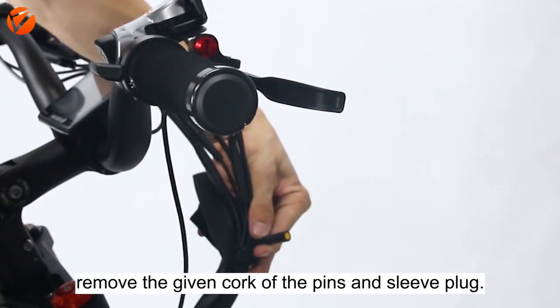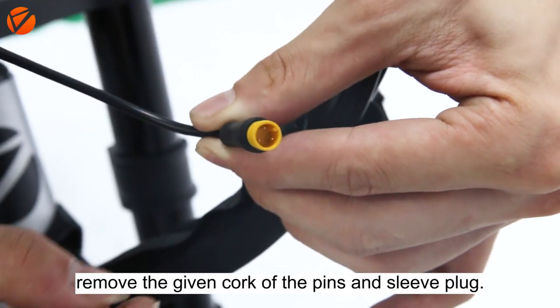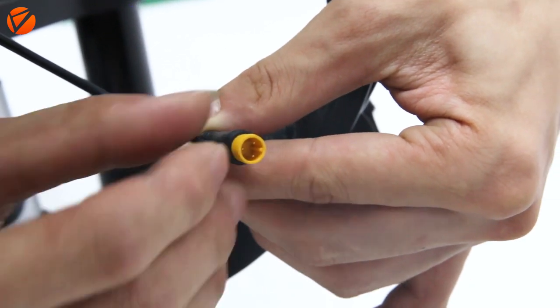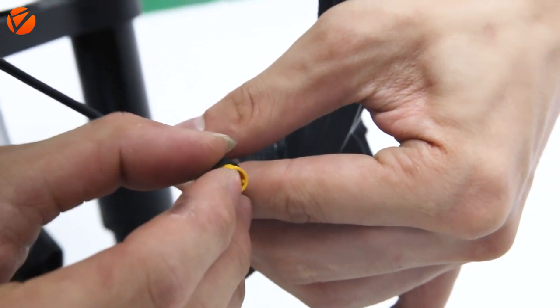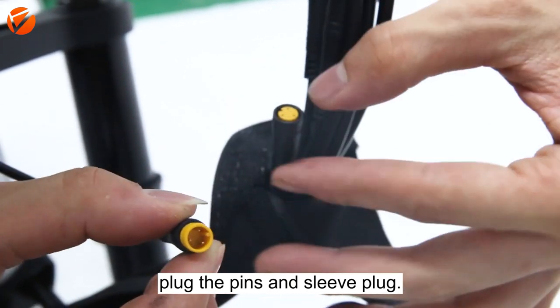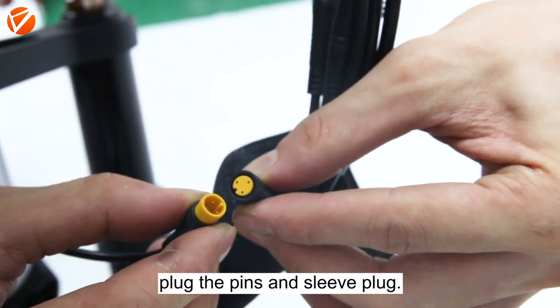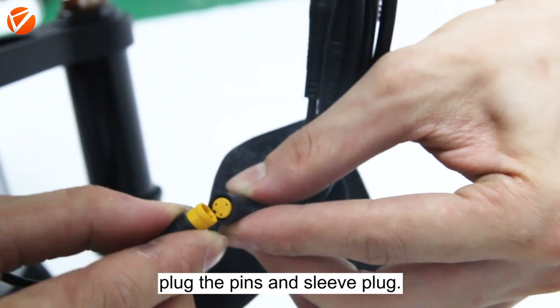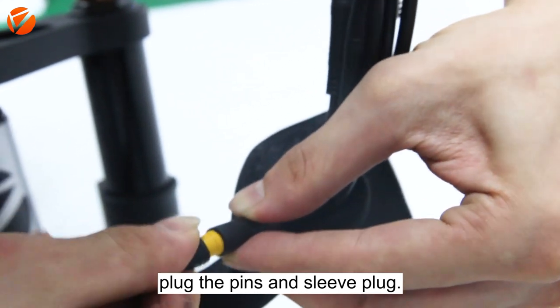Open the hook and loop fastener. Remove the given clamp of the pins and speed plug. Protect pins and speed plug.